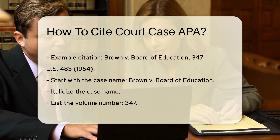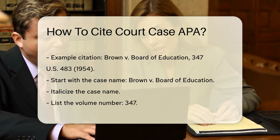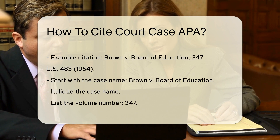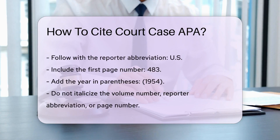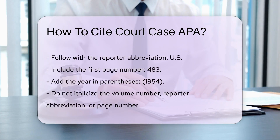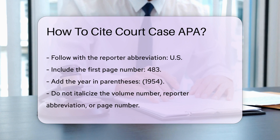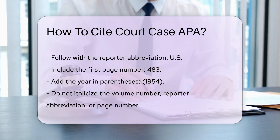Begin with the case name, Brown v. Board of Education — italicize this portion. Next, list the volume number, 347. Follow this with the reporter abbreviation U.S., then include the first page number, 483. Finally, add the year in parentheses, 1954.